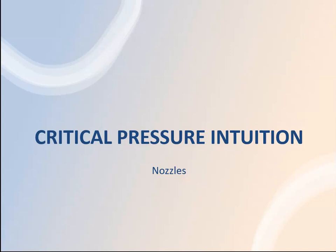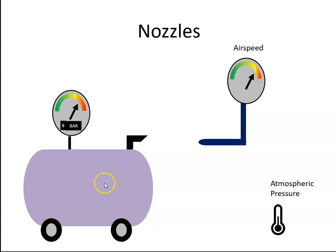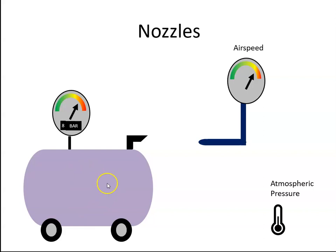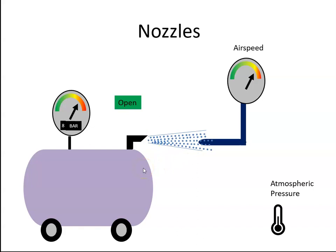In this video we want to get some intuition about what's happening with a nozzle. Let's begin by considering a compressor where the air is compressed to 8 bar, and out here we're at atmospheric pressure which is 1 bar — so we have a 7 bar differential. If we open a valve, the air under pressure wants to gush out, and we can imagine it coming out at a very fast velocity.